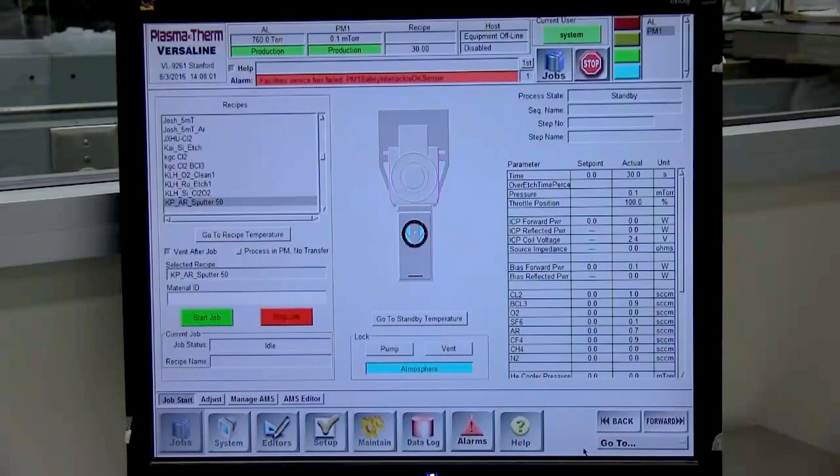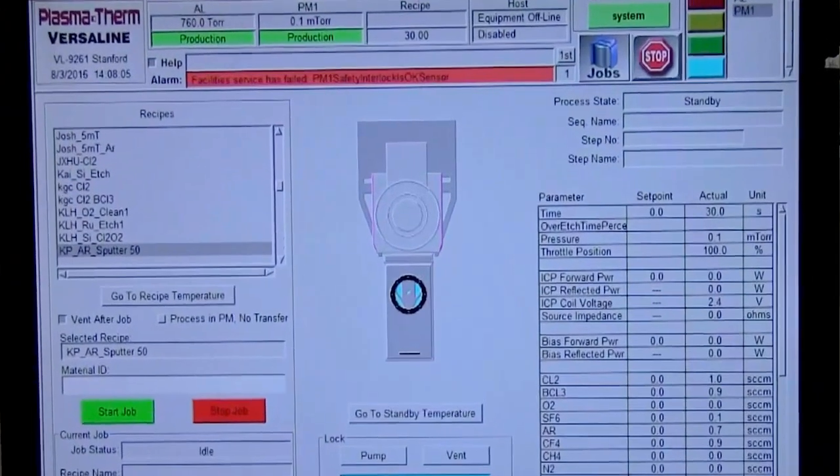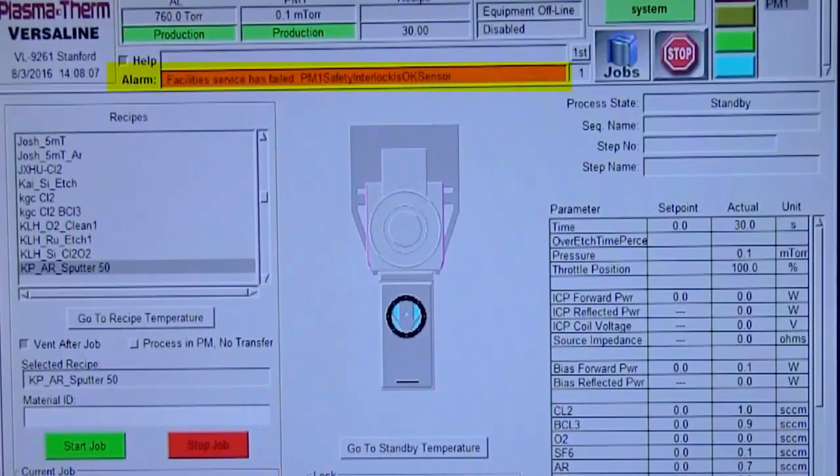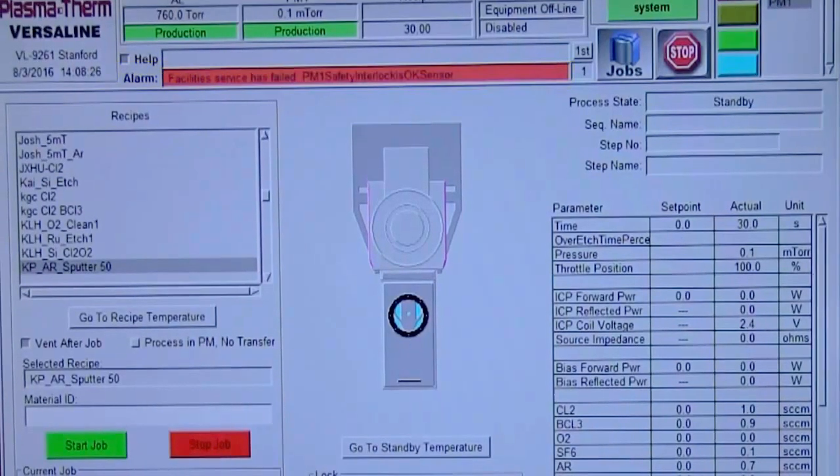On the Plasmatherm control screen, note that the alarm Facilities Service Has Failed indicates that the equipment is disabled in Badger. This alarm will disappear when the equipment is enabled.